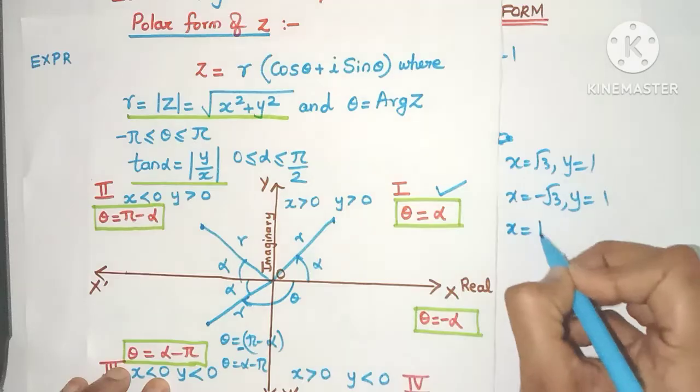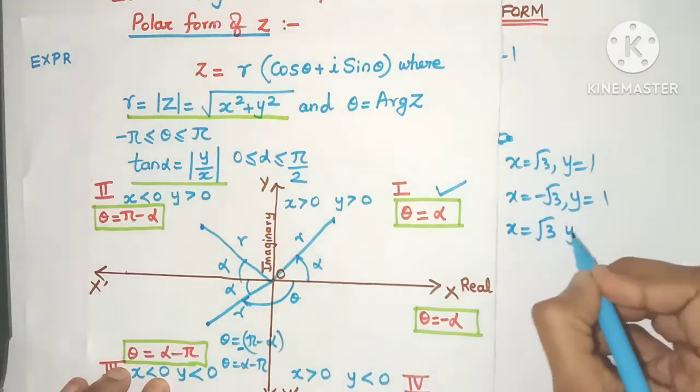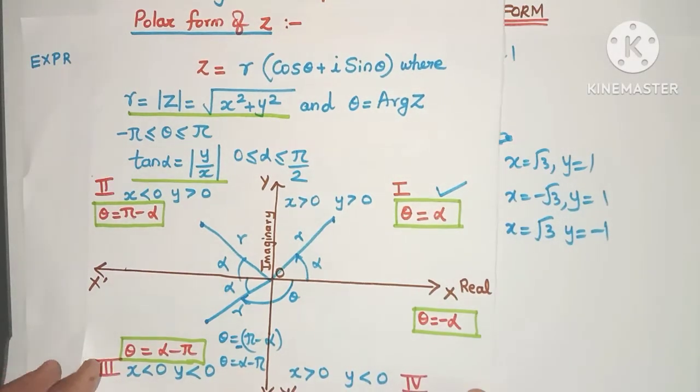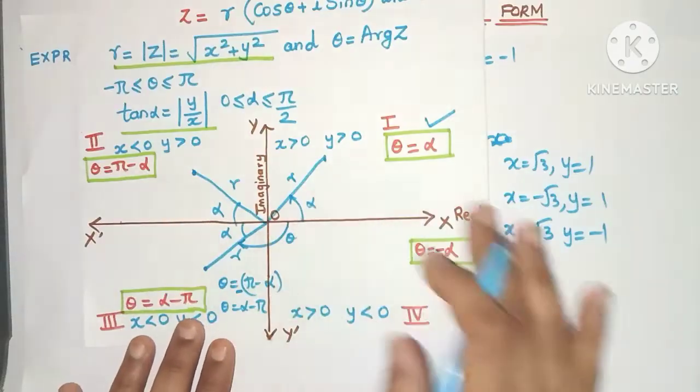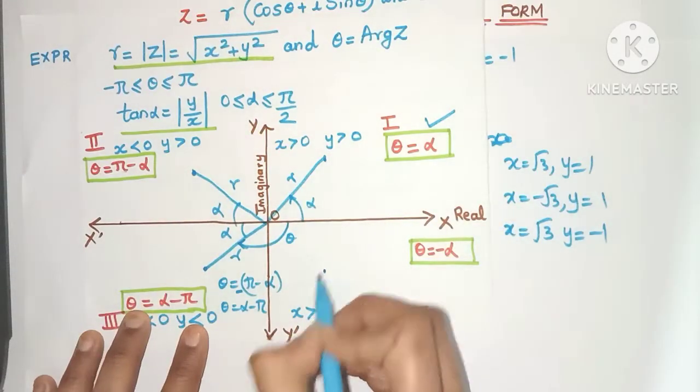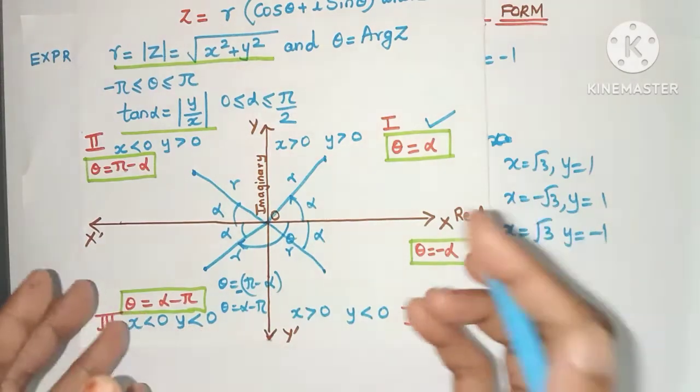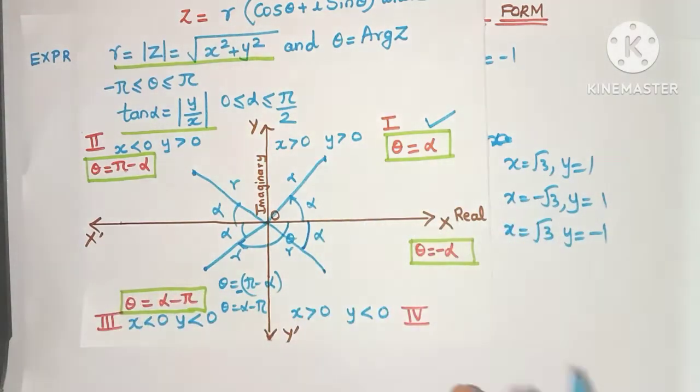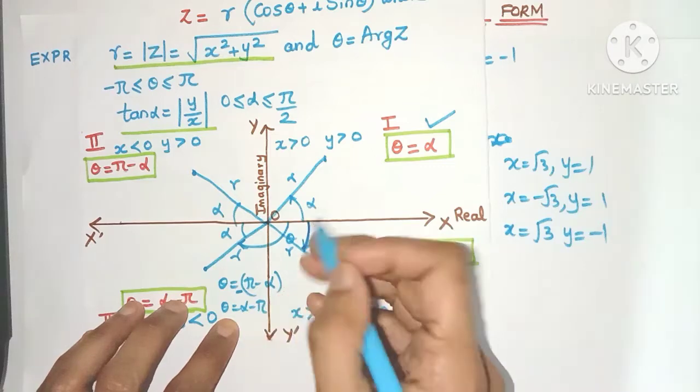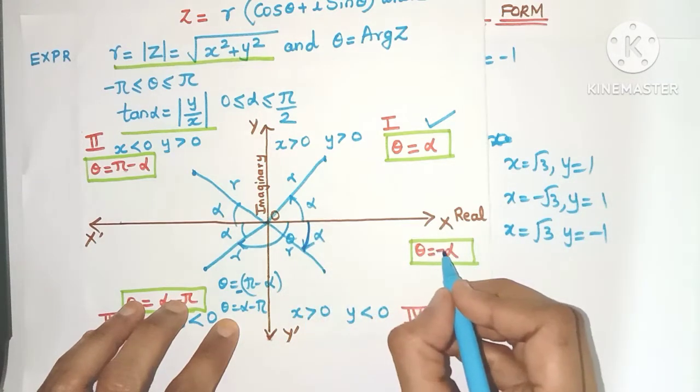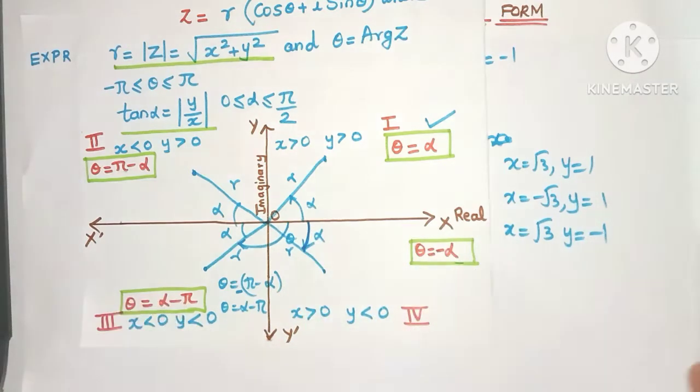Now what when x is positive say √3 but y is negative. Which quadrant, yes you guessed it right. It will be in the fourth quadrant. Maybe a point over here. So this will be my r. This will be my alpha. So here you will see that theta is again alpha. But look at the direction. It's clockwise direction. So theta will be minus of alpha.